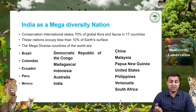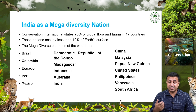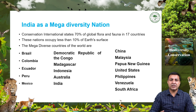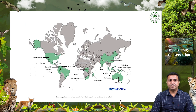The remaining mega diverse countries are the Democratic Republic of Congo, Madagascar, Indonesia, Australia, India, China, Malaysia, New Guinea, United States, Philippines, Venezuela, and South Africa. These are the 17 mega diverse countries of the world, as shown on the map with green highlighted portions indicating each mega diverse country.